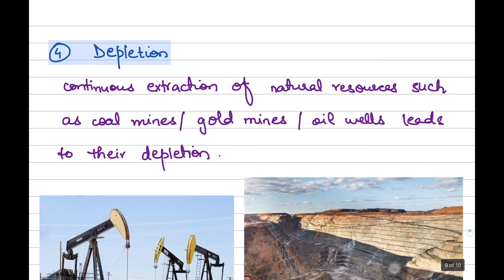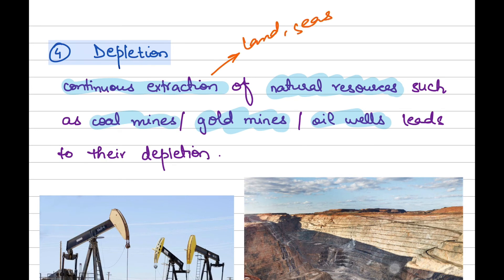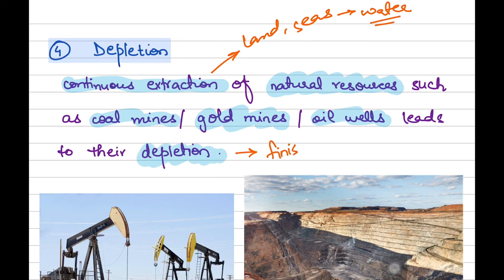Now let us move to our last factor, and that is depletion. Depletion means that if a business uses natural resources in order to produce goods and services — such as gold mines, oil wells, or coal mines — then the continuous extraction of these natural resources either from the land or from the seas will lead to their depletion. That is, these resources will finish because of their continuous extraction. So if a business is dependent upon natural resources, it has to take this factor — depletion — into account: if you are just continuously taking from the land and seas without giving anything back, there will come a time that these important assets will finish from your region.